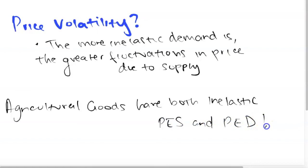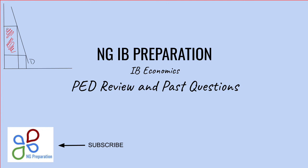Some consequences of this price volatility include the unpredictable nature of agricultural prices making it difficult for farmers in developing countries to estimate their income, for governments to estimate tax revenue, and for firms to make investment decisions. If an economy is specialized in agricultural goods, this volatility creates significant uncertainty. That completes our review of PED and common past paper questions — please subscribe, like, and comment with suggestions for future topics.